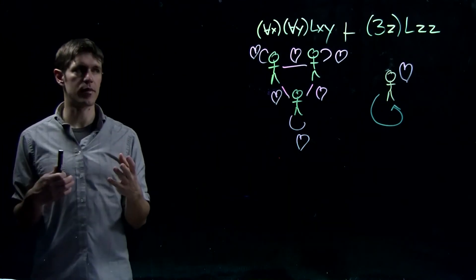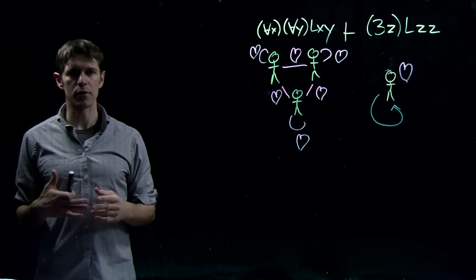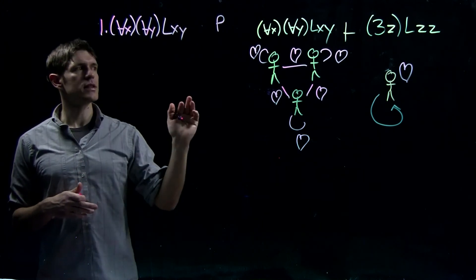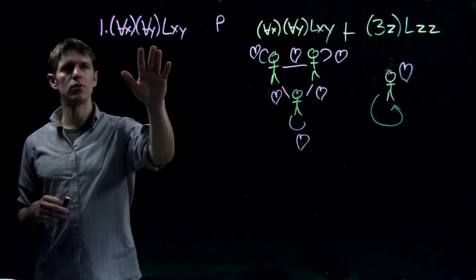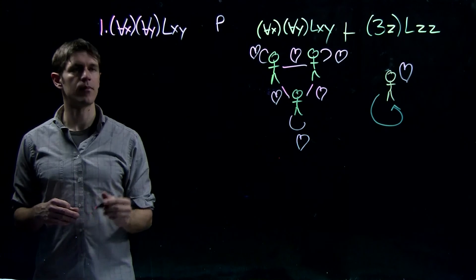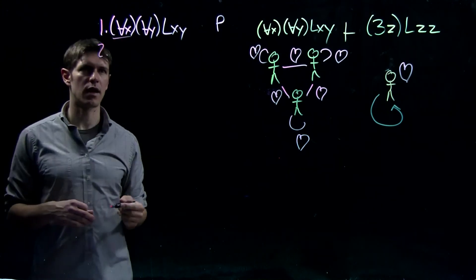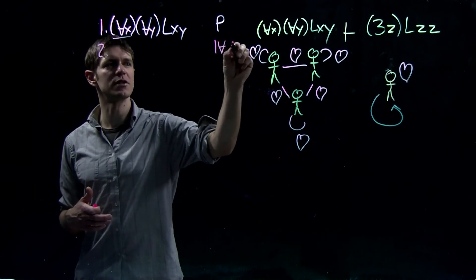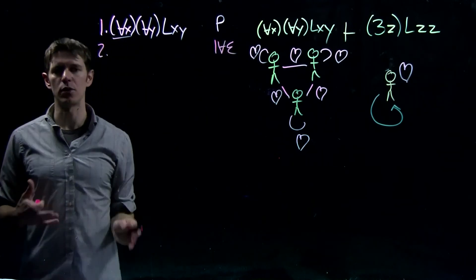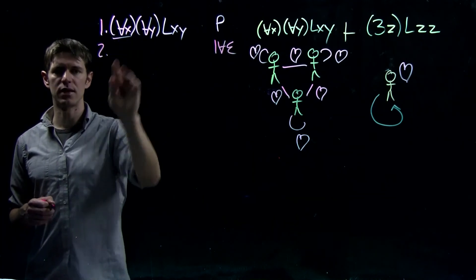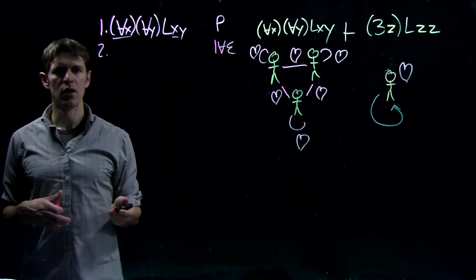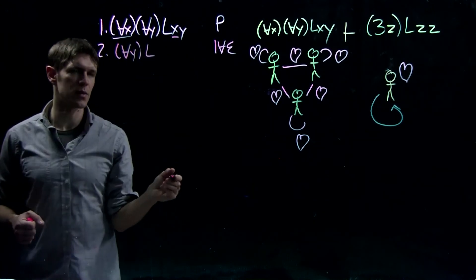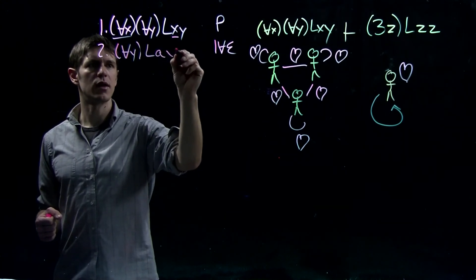We'll start by writing the formula at line one. To derive the conclusion, we'll remove the universal quantifiers using universal elimination. We start by removing the outermost universal quantifier binding X, using line one and universal elimination. We replace every instance of X with a name — here I'll pick A — while leaving Y alone. So line two becomes AY LAY.